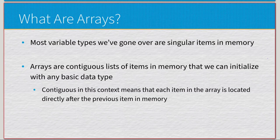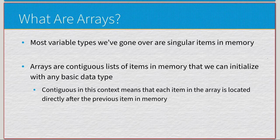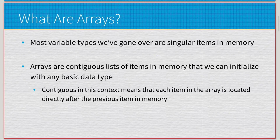Most variable types we've gone over are going to be singular items allocated in memory, so whenever we use an integer, float, double, and so on, it's just a single data type allocated in memory. The exception was strings, because those are a collection of characters and it is what is known as an array. Arrays are contiguous lists of items in memory that we can initialize with any basic data type.